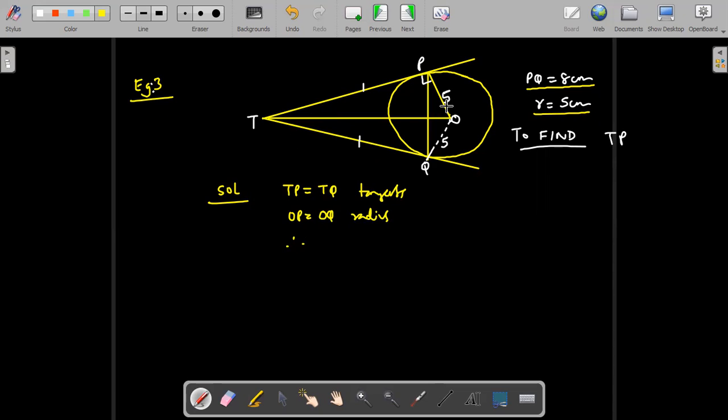In a quadrilateral if two pairs of adjacent sides are equal, this figure is a kite. So here we can conclude that this figure OPTQ is a kite. OPTQ is a kite. Again the reason is because two pairs of adjacent sides are equal.